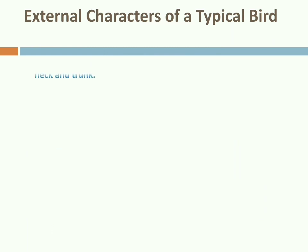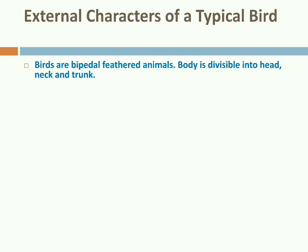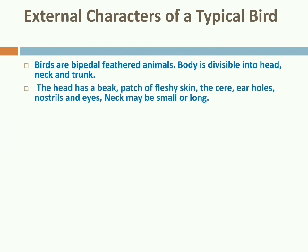When you sight a typical bird, you can observe some external characters. Generally, birds are spindle-shaped. They are bipedal feathered animals. The body is divisible into head, neck, trunk, and tail. The head has a beak, a patch of fleshy skin called the cere, ear holes, nostrils, and eyes. The neck may be sometimes short as in pigeons and doves, or long as in flamingos, herons, and cranes.